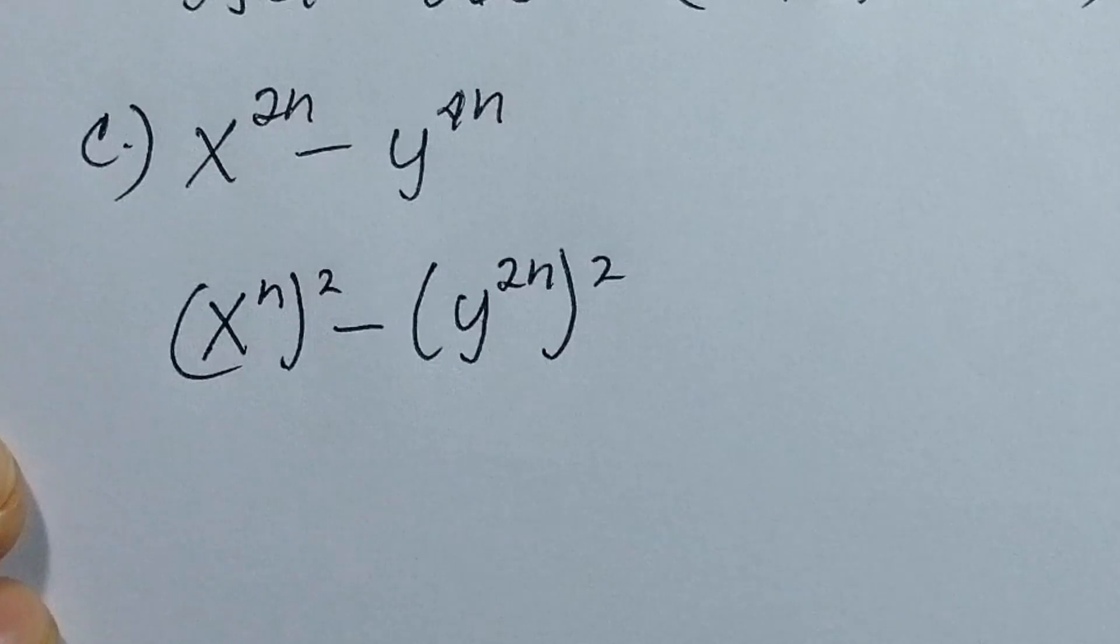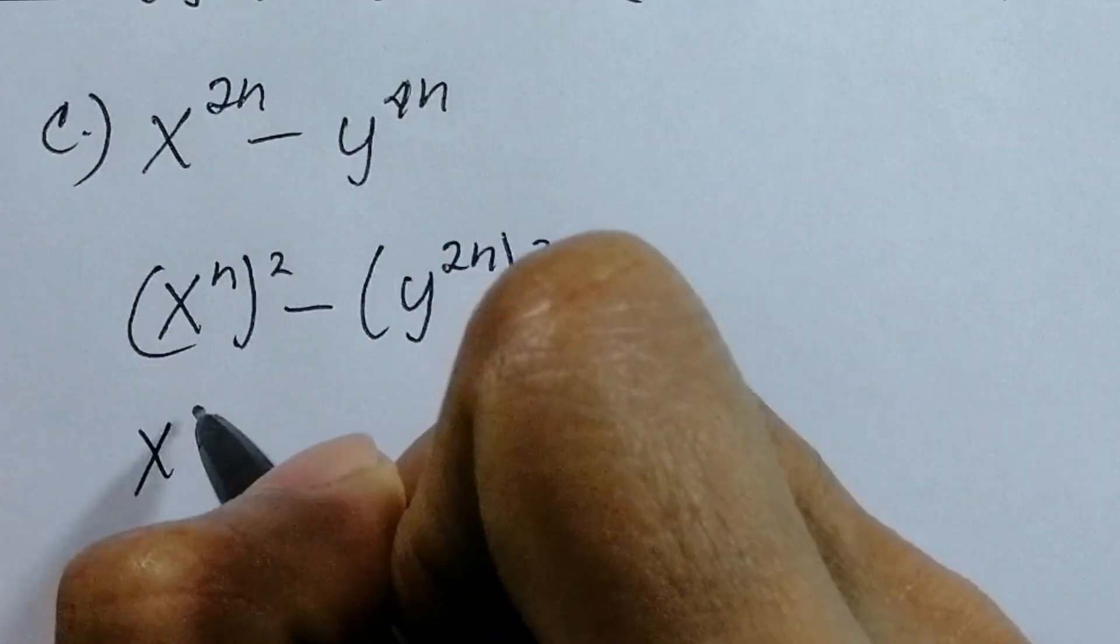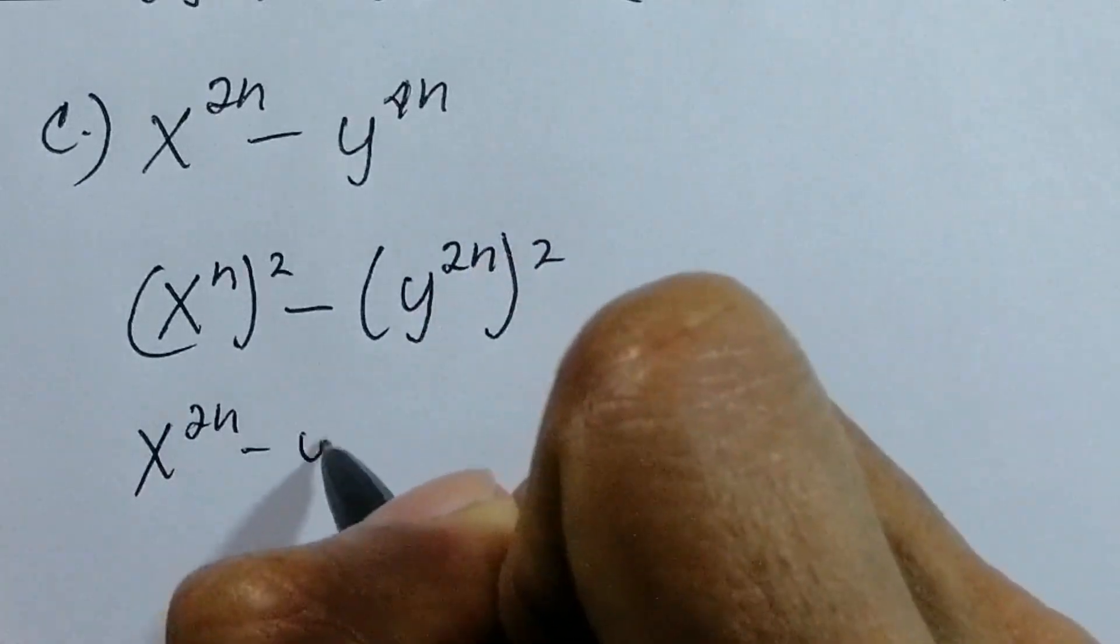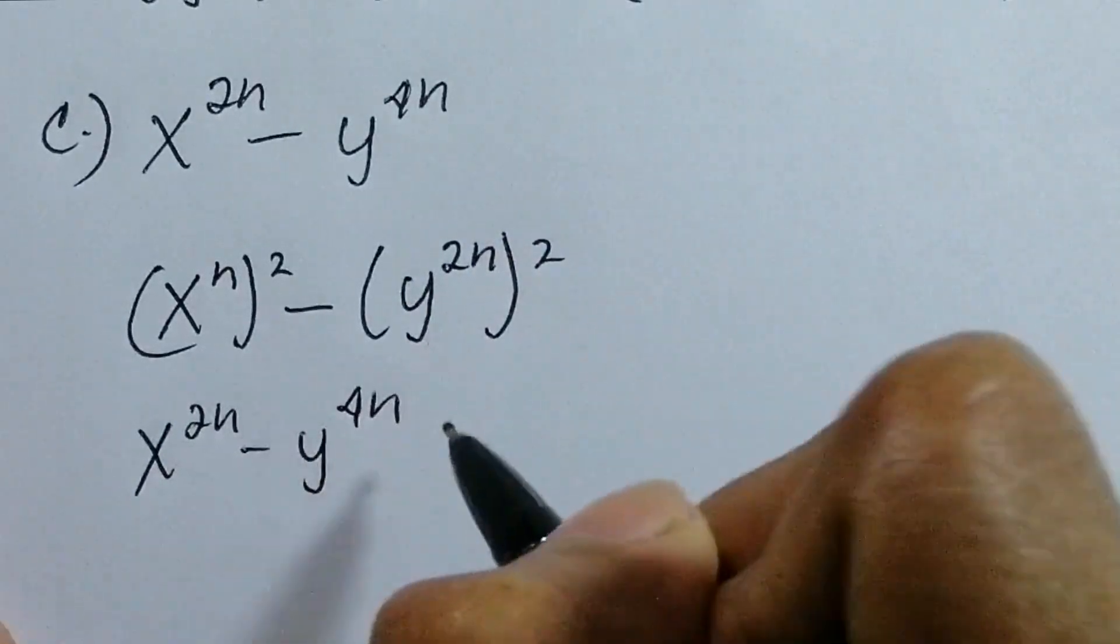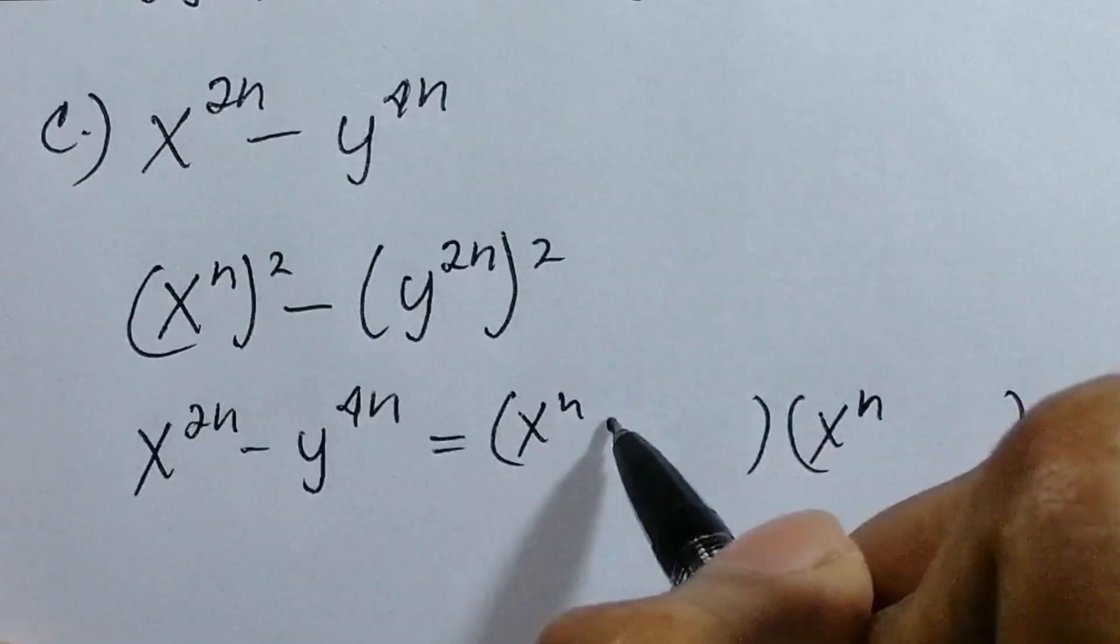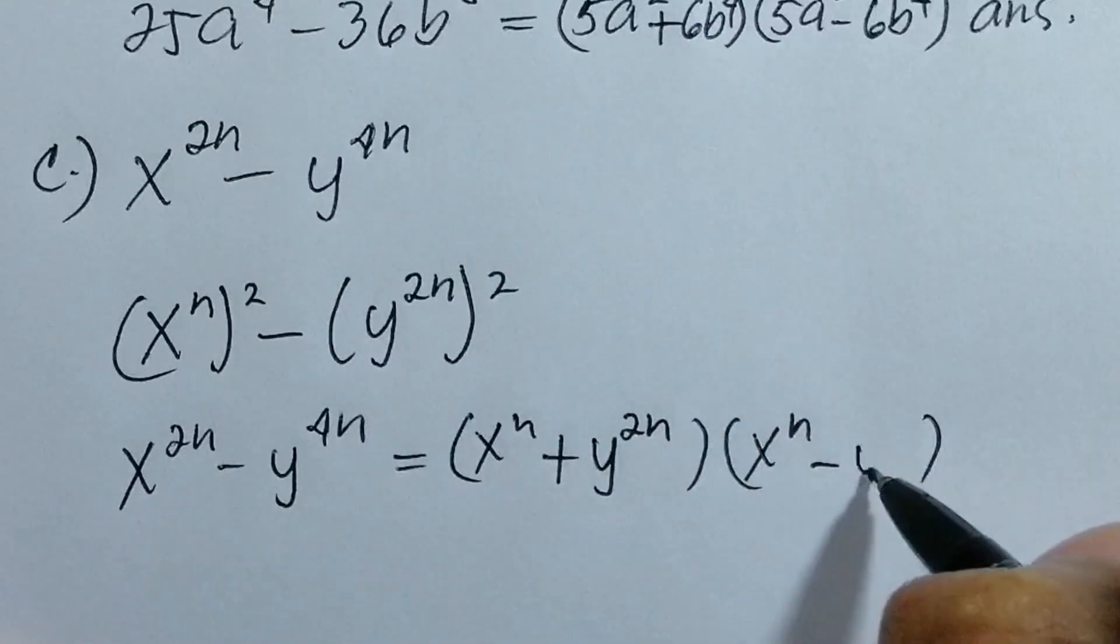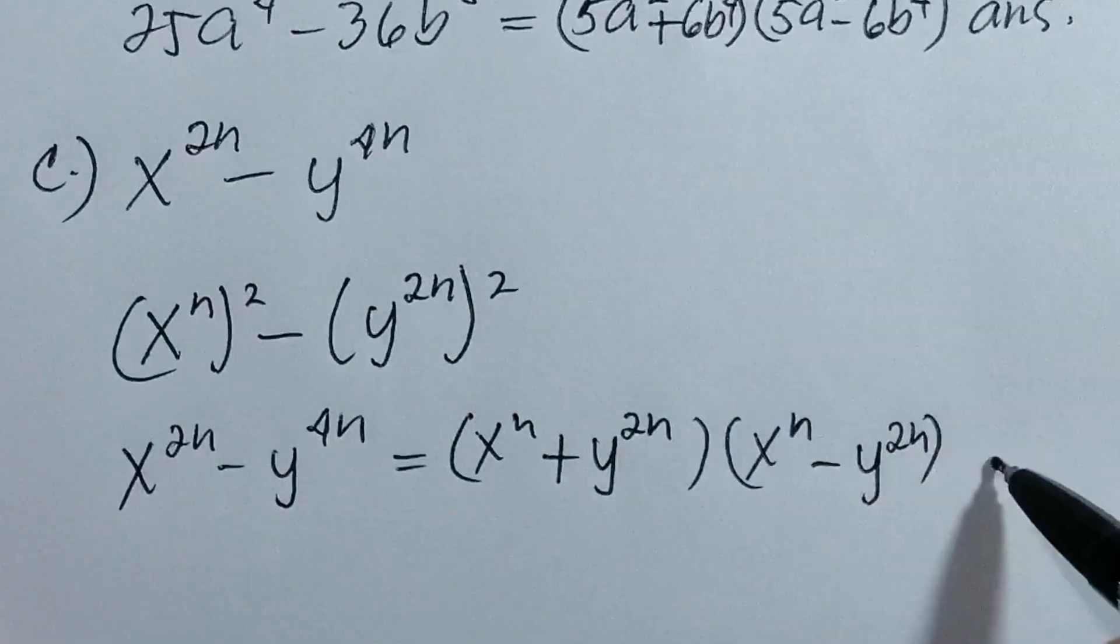Using the difference of two squares formula: x^(2n) - y^(4n) = (x^n + y^(2n))(x^n - y^(2n)). This is our answer.